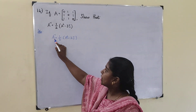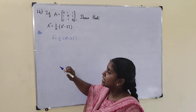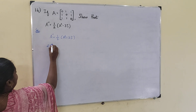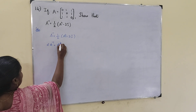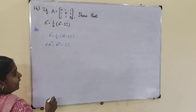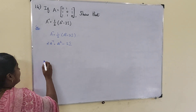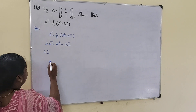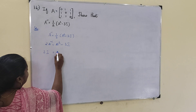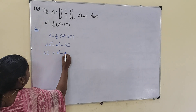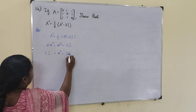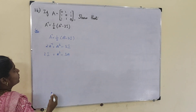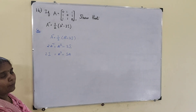We have to prove that A inverse equals half into A square minus 3I. It will be easier to multiply both sides by 2, giving 2A inverse equals A square minus 3I. Then multiplying both sides by A, we get 2I equals A cube minus 3A. So if we prove that A cube minus 3A equals 2I, the result follows.